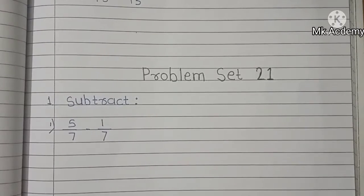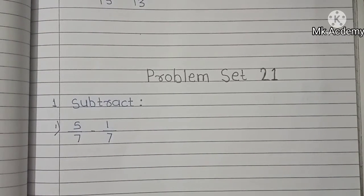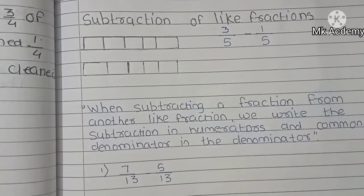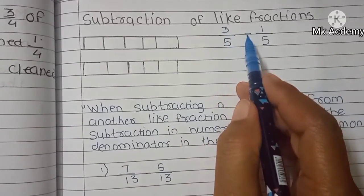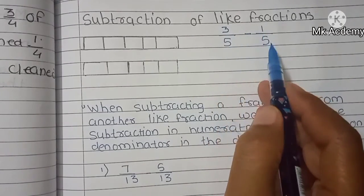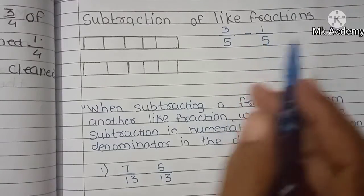Hello students, today we solve problem set 21 on subtraction. In this set we learn subtraction of like fractions. For example, we are given 3 upon 5 minus 1 upon 5 — subtract 1 upon 5.